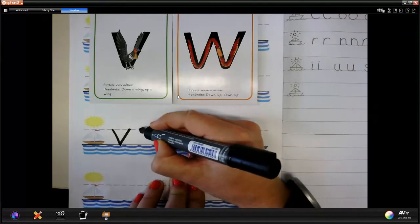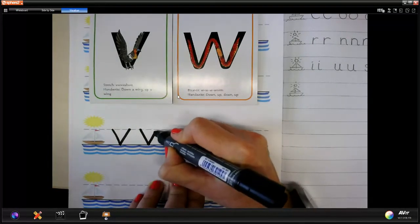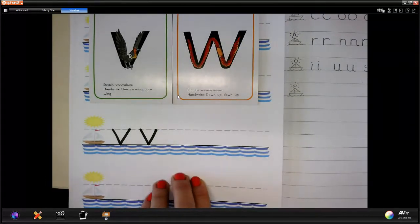Let's try another one. Straight down one wing and up the other wing. That was easy.